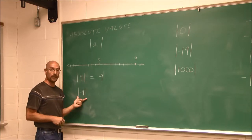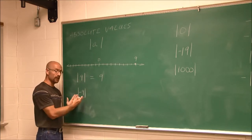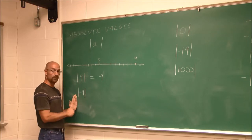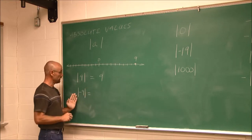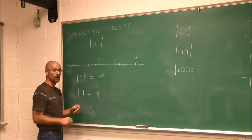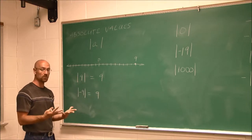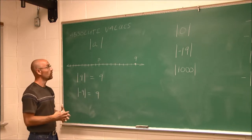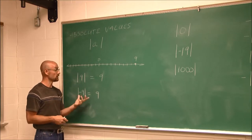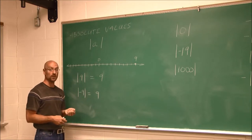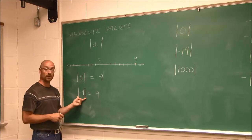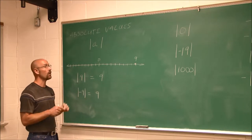What about negative 9? This asks how far from 0 is negative 9. Negative 9 is also 9 units away. We don't have to specify which direction, because it's a distance — it's 9 units from 0. It happens to be to the left, but that's not what this asks, just how far.